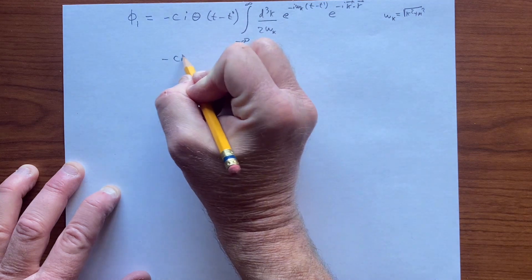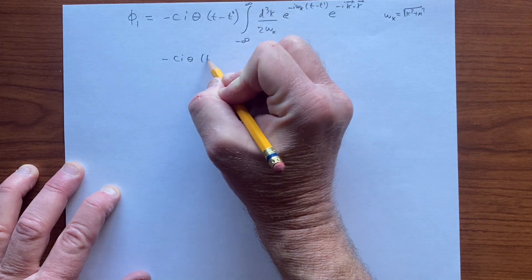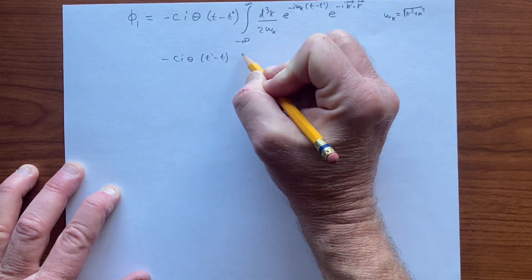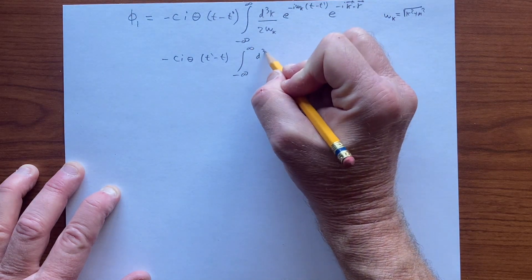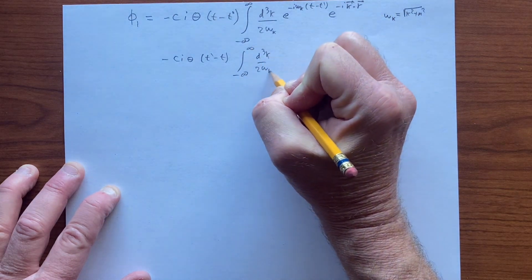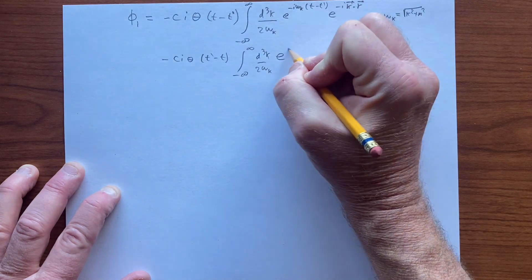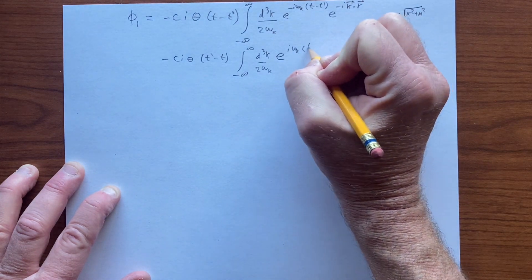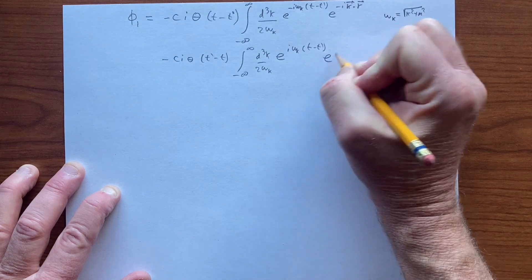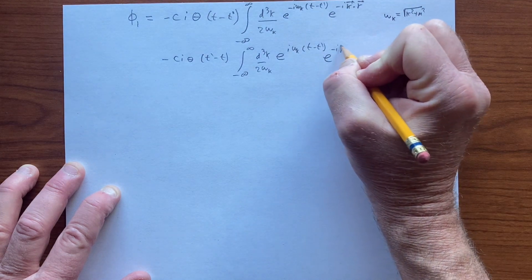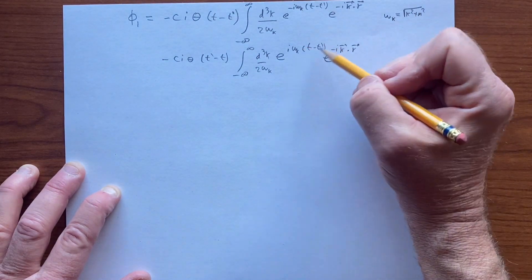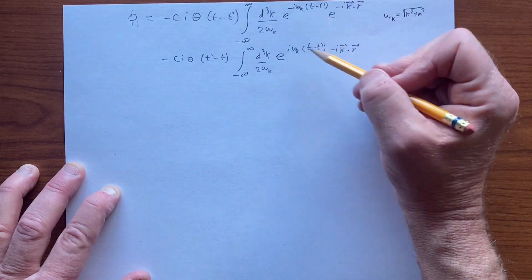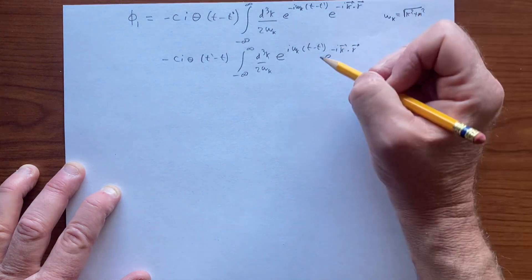Minus c i theta t prime minus t minus plus infinity d3k over 2 omega k, e to the i omega k, t minus t prime, e to the minus i k r. Notice that in the previous video, I think I missed the time part in writing one of these two equations.